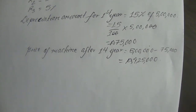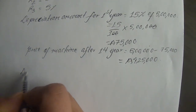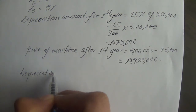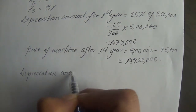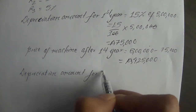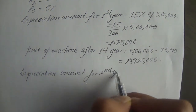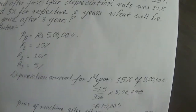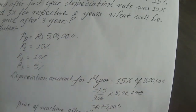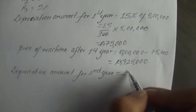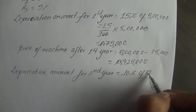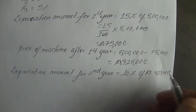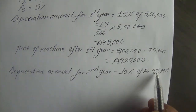Second year: we have the depreciation rate. Depreciation amount for second year. The common mistake students make is applying 10% to the original Rs. 5,00,000 instead of the depreciated value. The depreciation rate of 10% should be applied to Rs. 4,25,000.